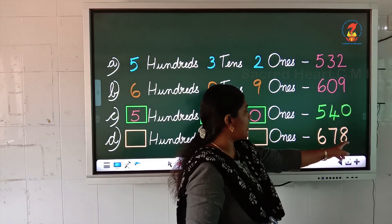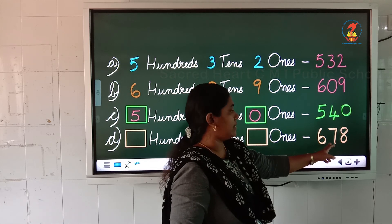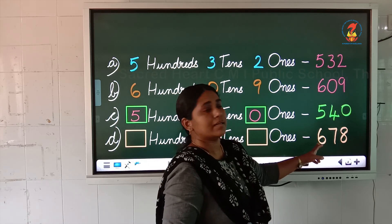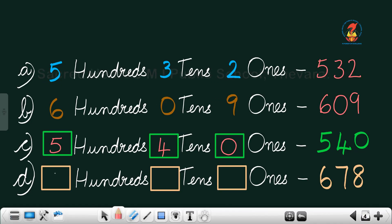In this number 678, how many 1s are there children? 8 ones. How many 10s? 7 tens. And how many 100s are there? 6 hundreds. So, we will fill the boxes 600, 7, 10 and 8, 1s. Got it?